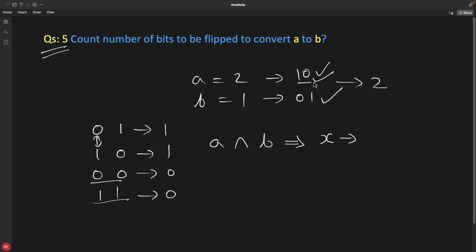For example, if you are doing XOR with 01 and 10, so 1 and 0 is 1, and 0 and 1 is 1. So the answer is 11, meaning we have to flip 2 bits. After XOR, you just have to find how many set bits are there, that's it.